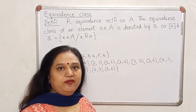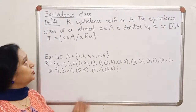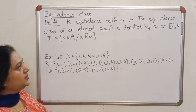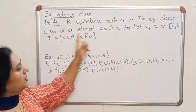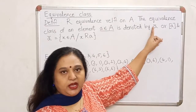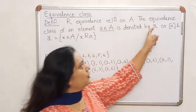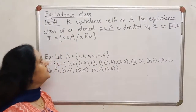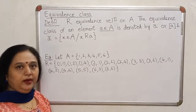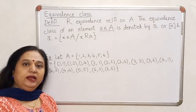Let's start with the definition of an equivalence class. Suppose R is an equivalence relation on a set A. For any element a of A, the equivalence class is denoted by ā (a-bar) or by square brackets [a]. Personally I prefer the notation ā, so I will stick to that. The equivalence class of an element a is defined as the collection of all elements in the set which are related to a.